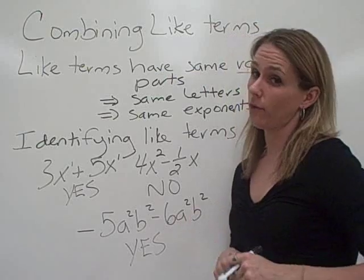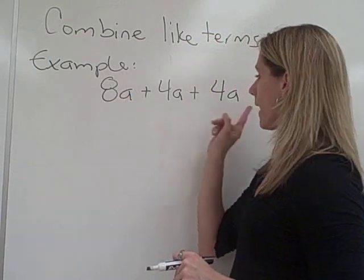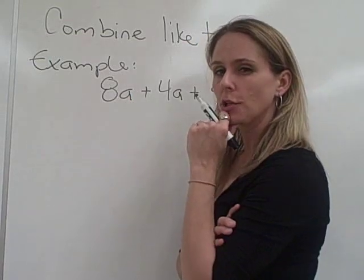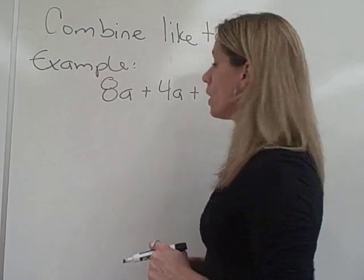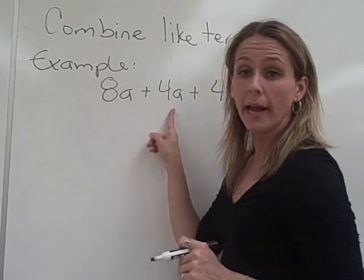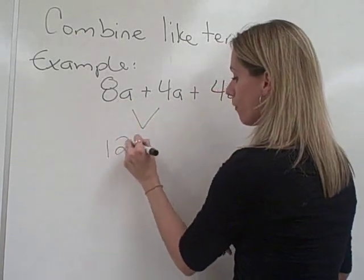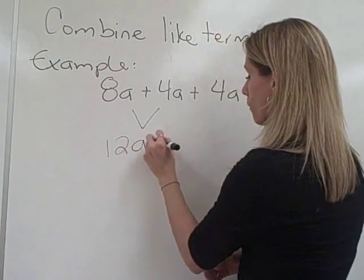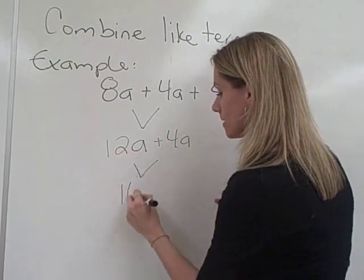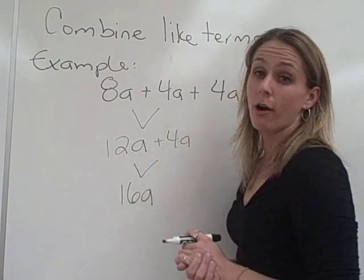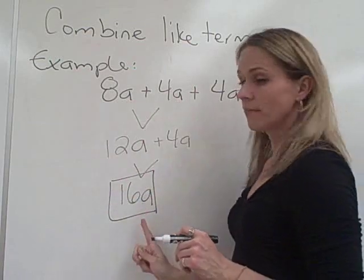So now let's actually do some combining of like terms. Now the first one we're going to look at is 8a plus 4a plus 4a. You'd first say, how many like terms do we have? All of these terms have a in it. So they are all like terms. So what we're going to do is combine 8a plus 4a, and that's going to be 8 plus 4, which is 12, and we keep our a. Now we're going to add that to 4a. 12a plus 4a is 12 plus 4, which is 16. And don't forget our a. And this is our answer. 8a plus 4a plus 4a is 16a.